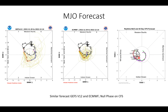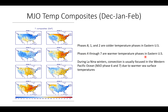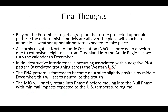The CFS V2 is straddling phase 8 to phase 1, then ultimately rotating into the null phase as well. Here are the MJO temperature composites as a reminder for December, January, and February. Blue coloring indicates below-normal temperatures; orange indicates above-normal temperatures. Generally, phases 8, 1, and 2 are all associated with colder temperature phases in the eastern U.S., whereas phases 4, 5, 6, and 7 are associated with warmer temperature phases across the eastern U.S. During La Niña winters, you typically see MJO convection focused in the western Pacific Ocean, favoring MJO phases 6 and 7.